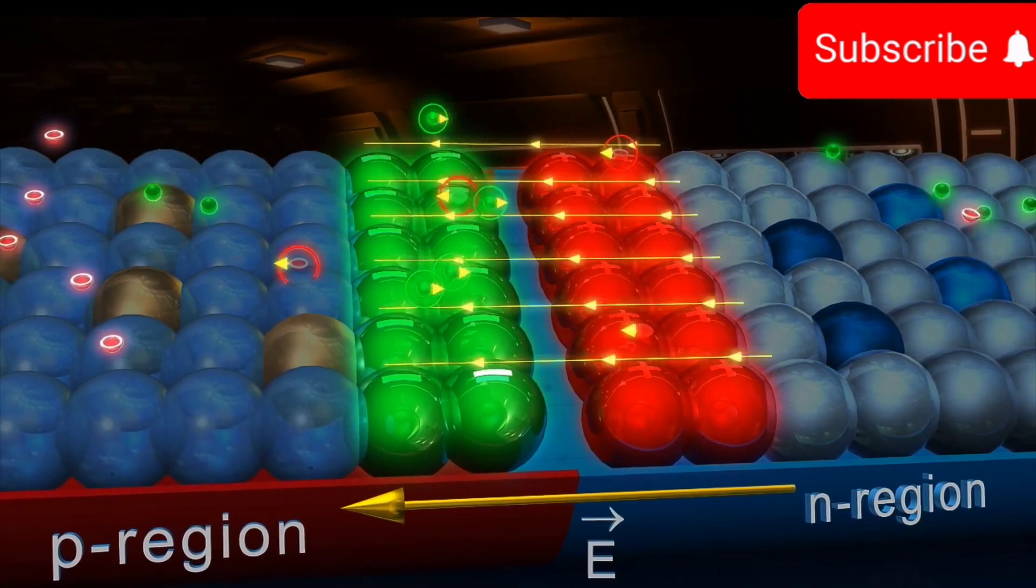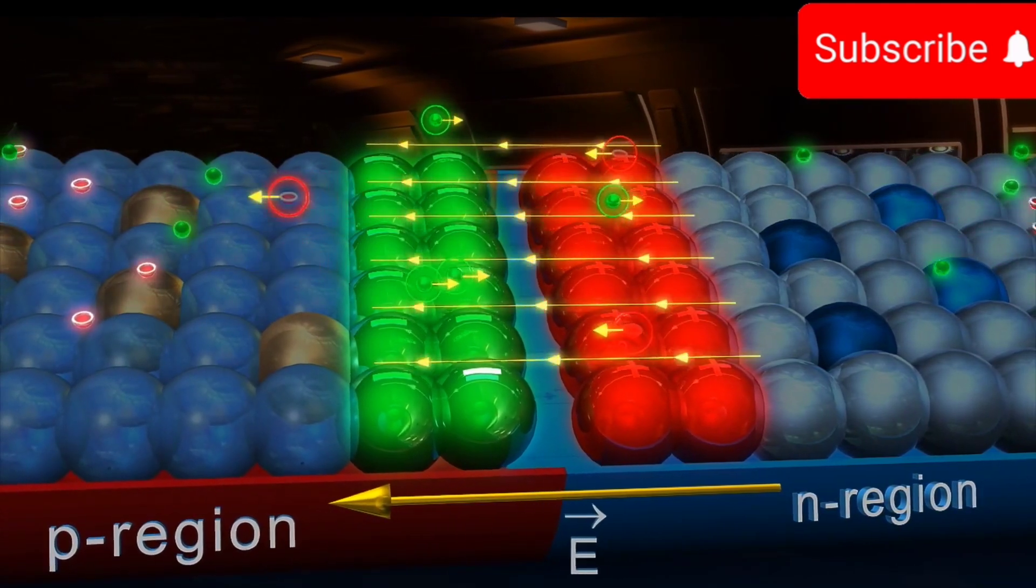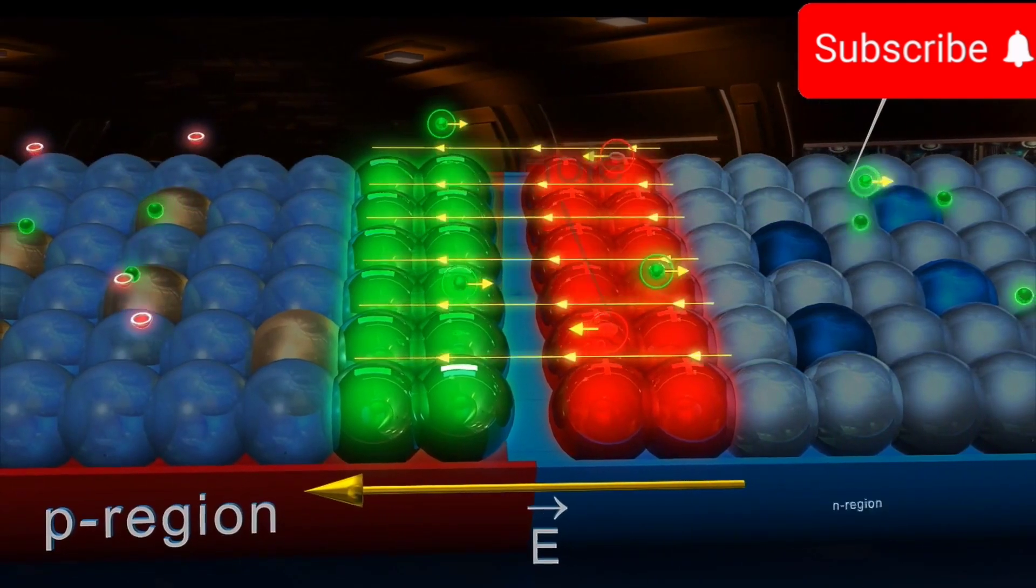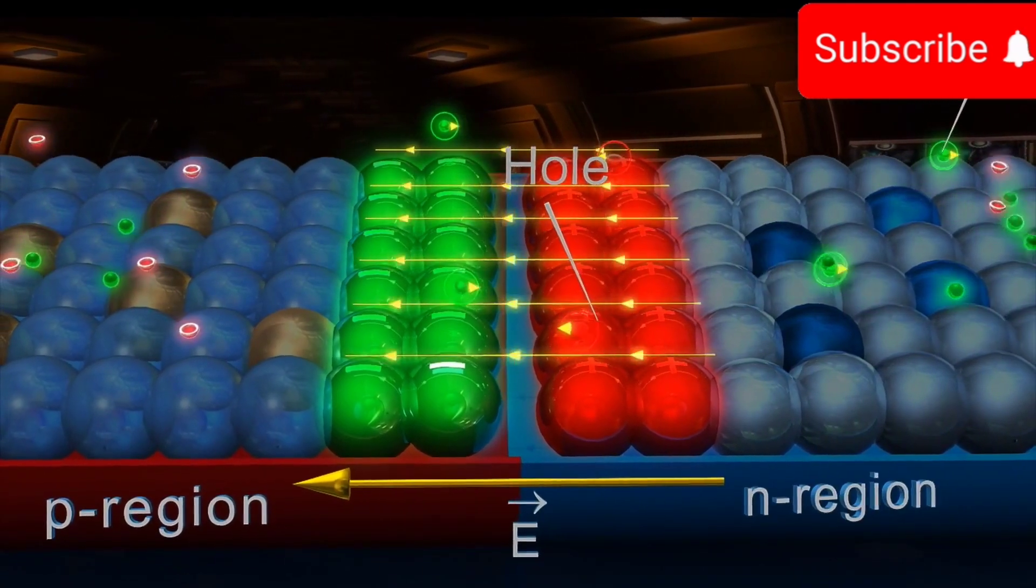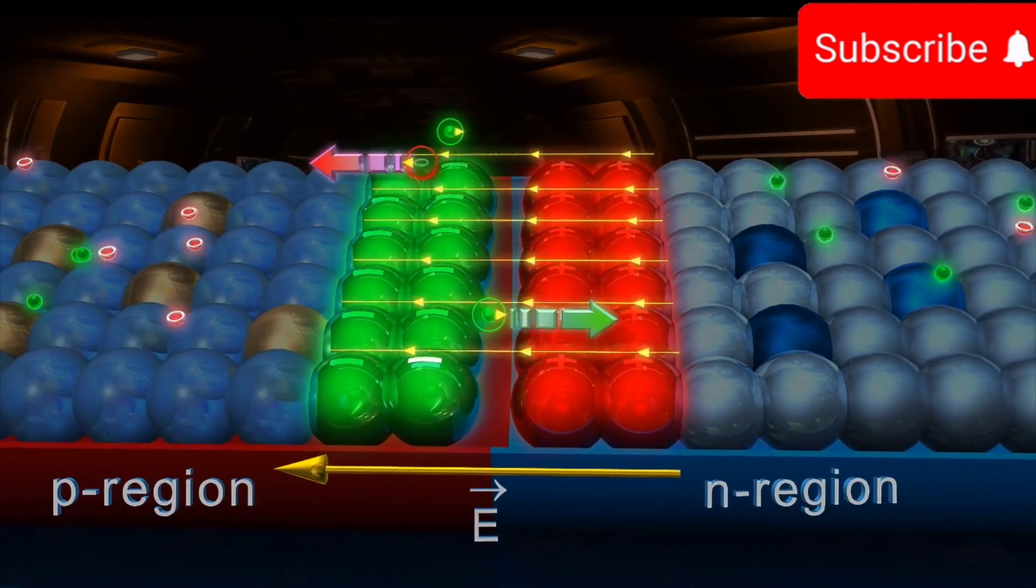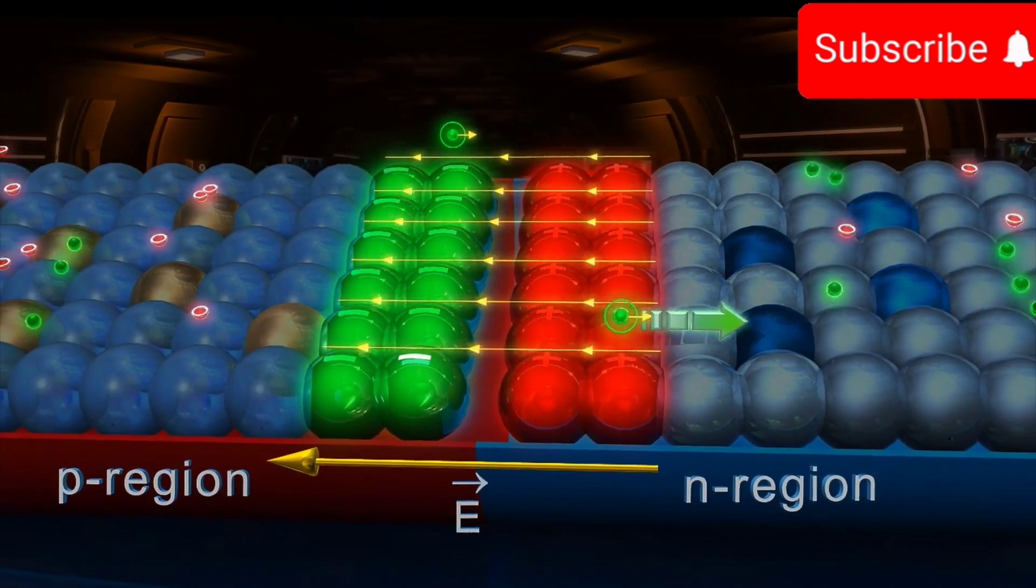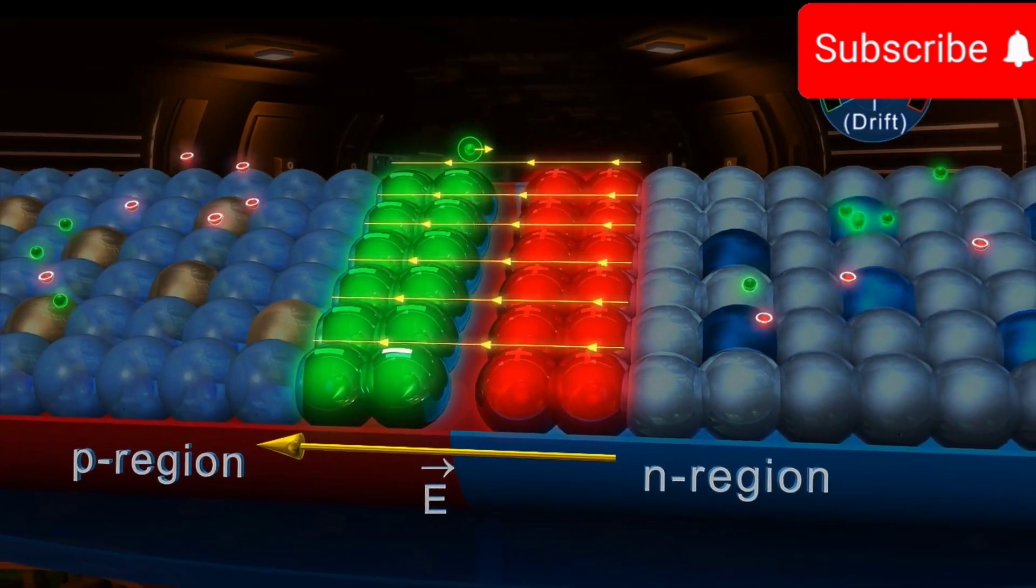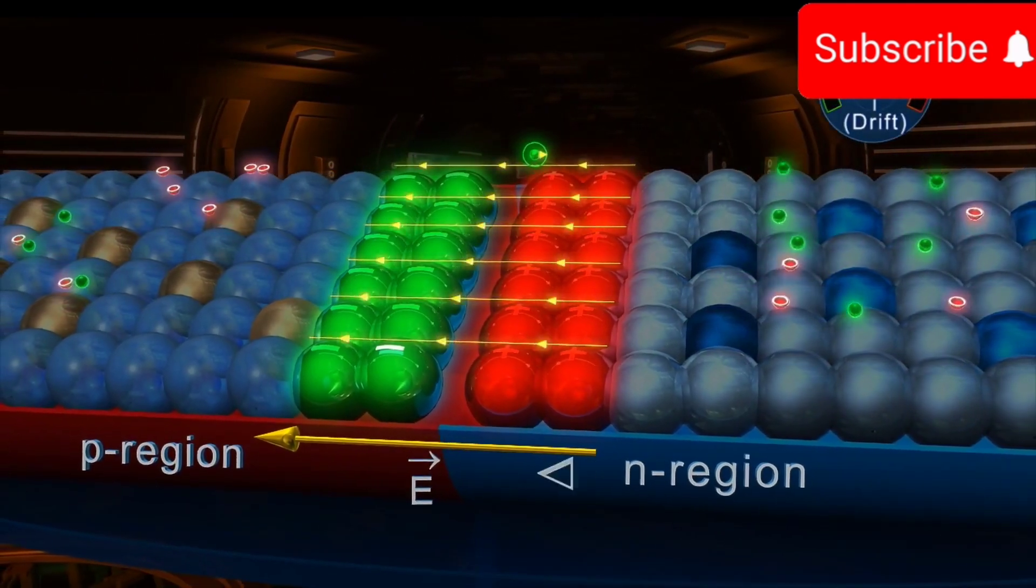These carriers are then swept by the field. That is, the electron in the P region drifts into the N region and a hole in the N region drifts into the P region. Thus, there is a flow of minority carriers, electrons towards N side and the holes towards P side resulting into a current from N side to P side.